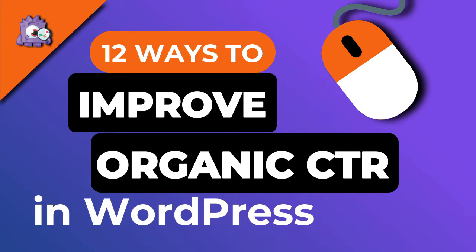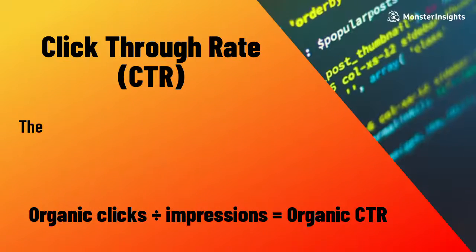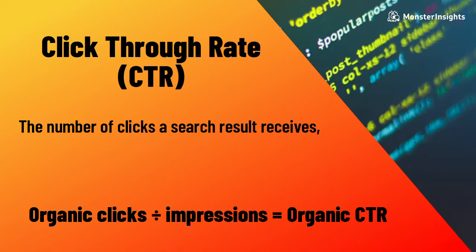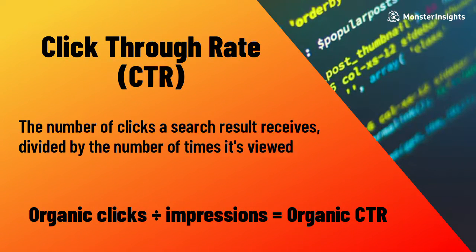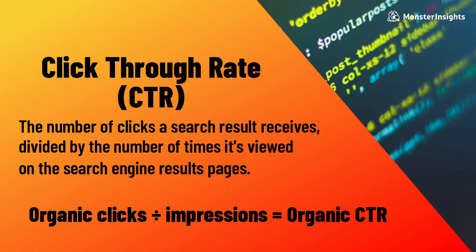Want to improve the organic click-through rate for your WordPress website? Organic click-through rate, or CTR, is simply the number of clicks a search result receives divided by the number of times it's viewed on the search engine result page. Improving your CTR helps improve your SEO rankings and drives more traffic to your site from search engines.